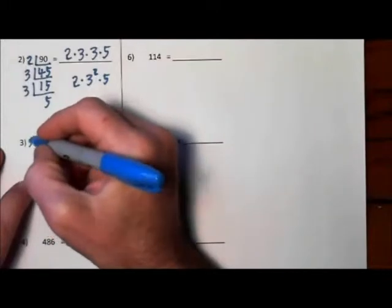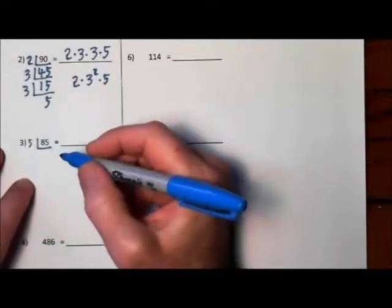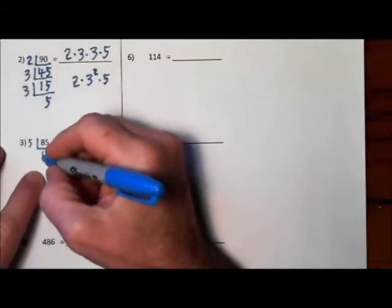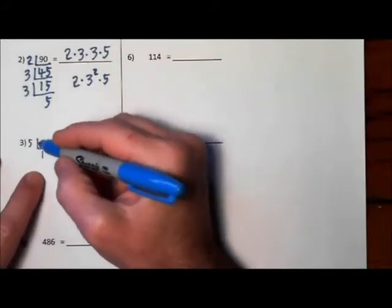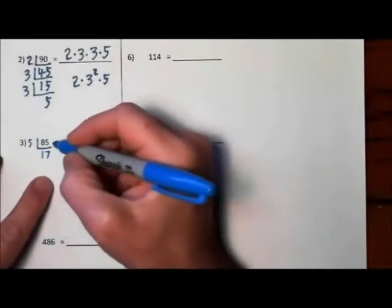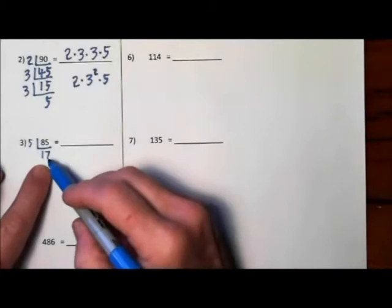So if we divide in with a 5, it goes into 8 one time with a 3 left over, so that's 35. 5 into 35 is 7. And 17 is a prime.